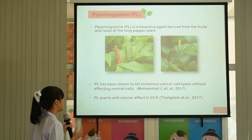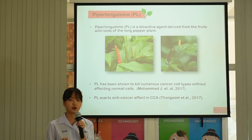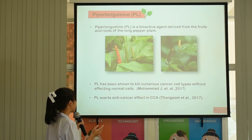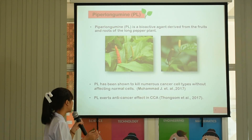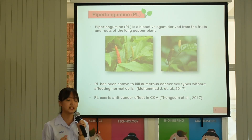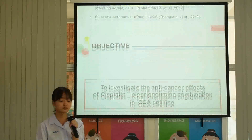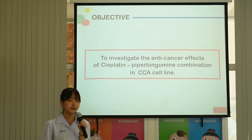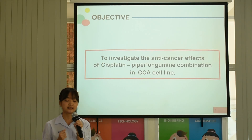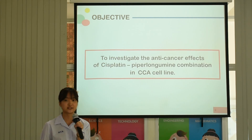Piperlongumine, or PL, is a bioactive agent derived from the roots of the long pepper plant. PL has been shown to kill numerous cancer cell types without affecting normal cells. And recently, it has been documented that PL can also kill CCA cells. All of this information motivated me to investigate the anti-cancer effects of Cisplatin and Piperlongumine combination in CCA cell lines.